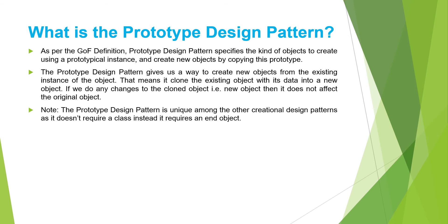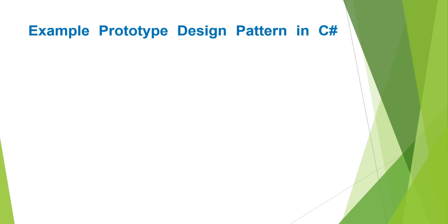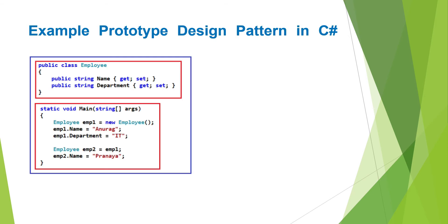Let us understand the prototype design pattern with an example. In C Sharp, when we try to copy one object to another object using the assignment operator, then both the objects will share the same memory address. The reason is the assignment operator copies the reference, not the object — except when there is a value type field, this operator will always copy the reference, not the actual object.